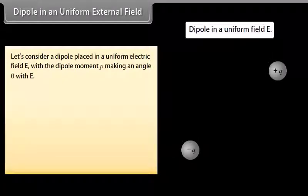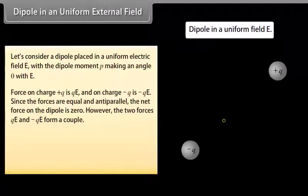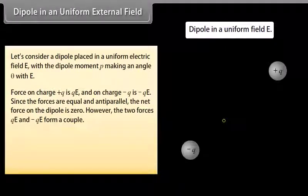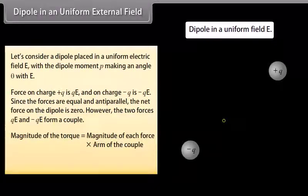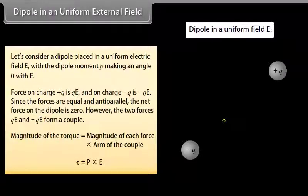Dipole in a uniform external field: Consider a dipole placed in a uniform electric field E with dipole moment p making an angle θ with E. The force on charge +q is qE and on charge −q is −qE. Since the forces are equal and antiparallel, the net force on the dipole is zero. However, the two forces form a couple; the magnitude of the torque is equal to the magnitude of each force times the arm of the couple, and this equation can be written as τ = p × E.